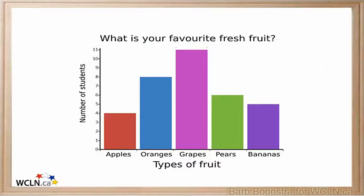A graph has several labels. These labels are important as they give you information about what is being shown.